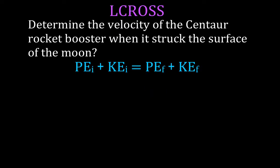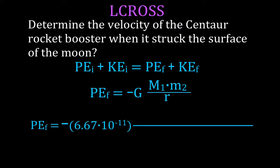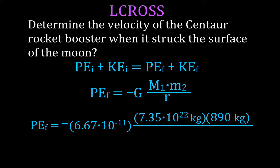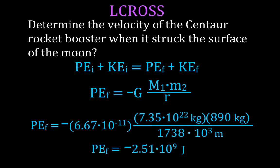Now we calculate the final potential energy — when the Centaur booster rocket strikes the surface of the moon. We use the same equation with the same masses and gravitational constant, but now r is just the radius of the moon, converted to meters. The final potential energy of the spent Centaur booster rocket is −2.51 × 10⁹ joules.